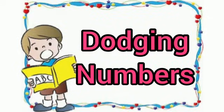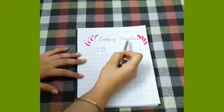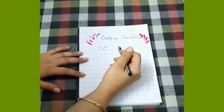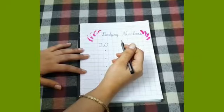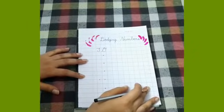I will speak numbers and you have to write the same number. Let's start dodging numbers. Dodging numbers of 1 to 10. First, listen carefully how you will write.